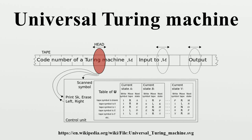In computer science, a universal Turing machine is a Turing machine that can simulate an arbitrary Turing machine on arbitrary input. The universal machine essentially achieves this by reading both the description of the machine to be simulated as well as the input thereof from its own tape. Alan Turing introduced this machine in 1936–1937. This model is considered by some to be the origin of the stored-programmed computer used by John von Neumann for the electronic computing instrument that now bears von Neumann's name, the von Neumann architecture.